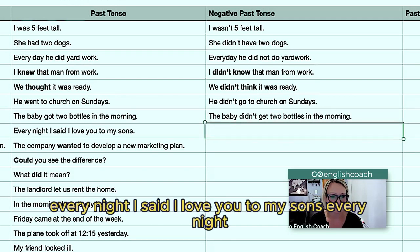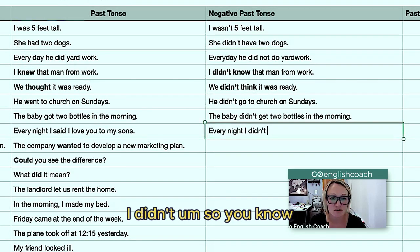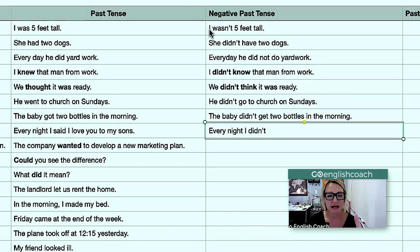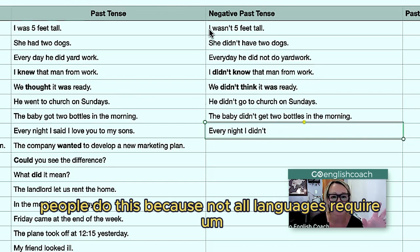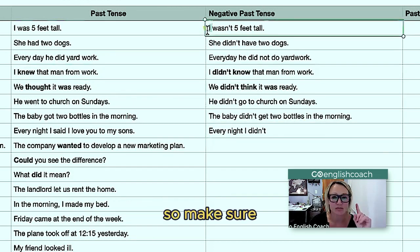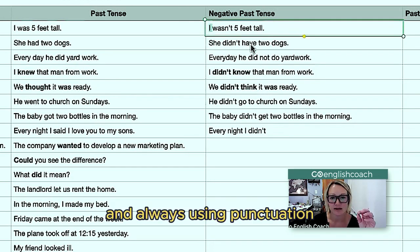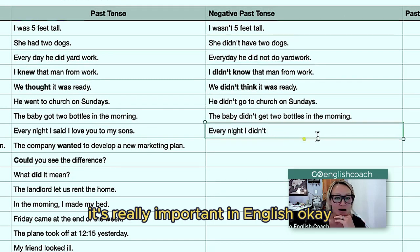Every night I said 'I love you' to my sons — every night I didn't say 'I love you' to my sons. Notice that 'I' is always capitalized, even if it's in the middle of the sentence. Many people don't do this because not all languages require a capital at the beginning. Make sure you're using capitals at the beginning of your sentences and always using punctuation — comma, period, all of those. It's really important in English.